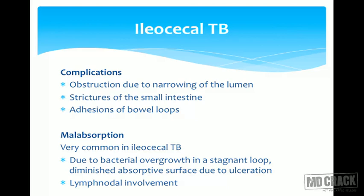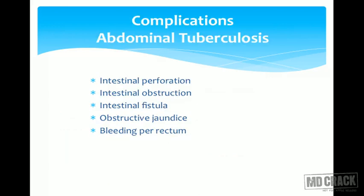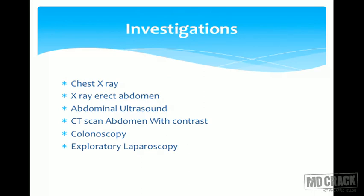With peritoneal involvement there can be adhesion of bowel loops, also causing obstruction. Malabsorption is very common in ileocecal tuberculosis: the proximal bowel is dilated, causing stagnation and bacterial overgrowth; ulceration diminishes the absorptive surface; and lymph node involvement impairs lymphatic drainage. Further complications include perforation, fistula, obstructive jaundice, hematochezia, and bleeding per rectum.